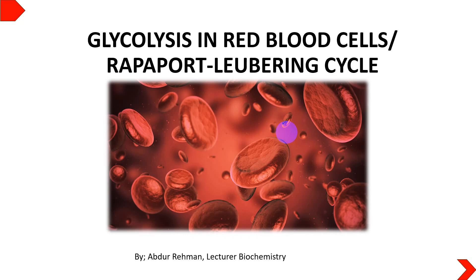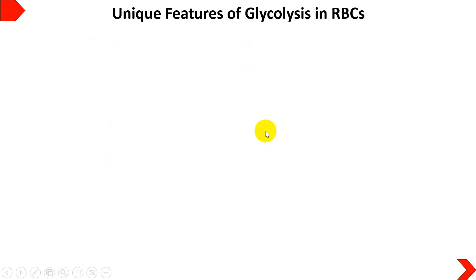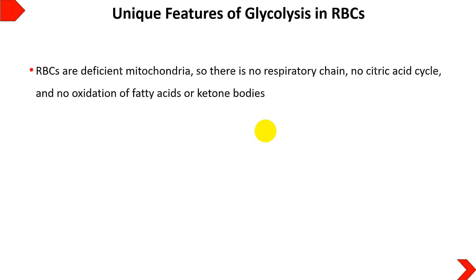Hello viewers. Today we will discuss a little more about glycolysis, and this time we will study it in red blood cells, also known as the Rapoport-Luebering Cycle. Red blood cells are more unique cells compared to other cells when we talk about glycolysis.